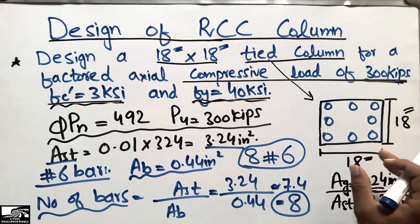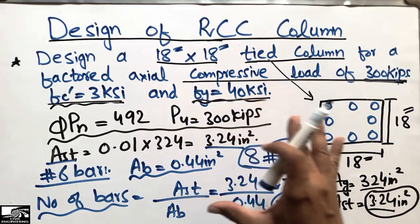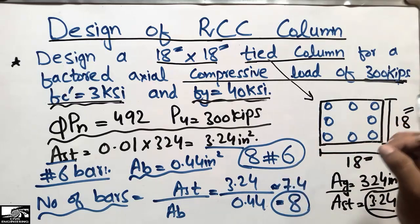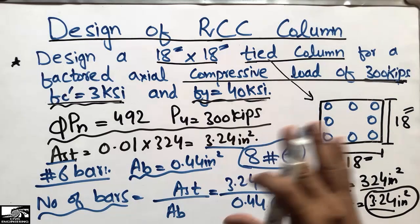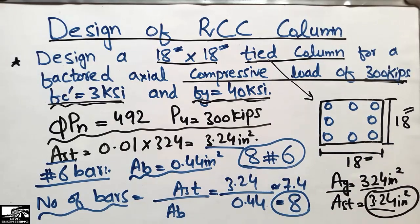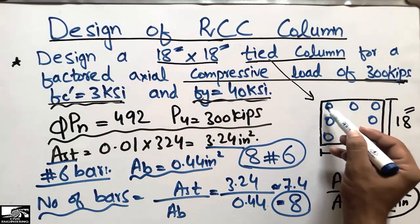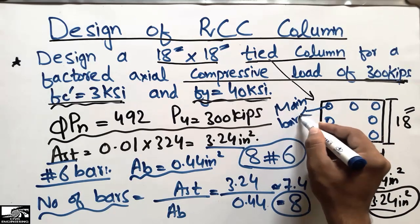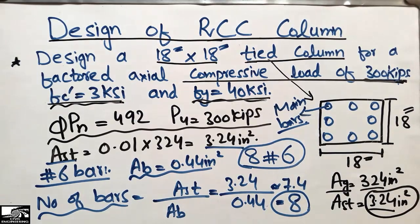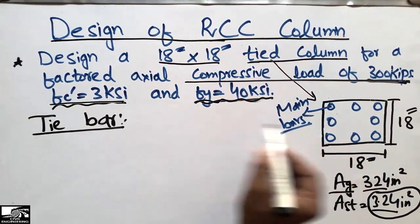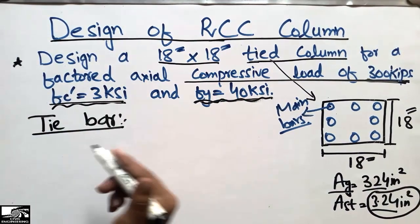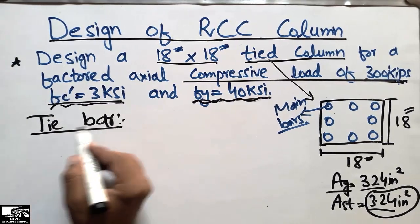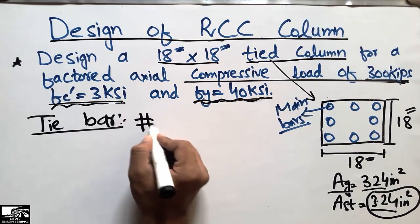The eight bars are placed symmetrically around the column cross-section. This completes the design of the main longitudinal bars. Next, we design the tie bars, which are the transverse reinforcement — similar to stirrups in a beam.